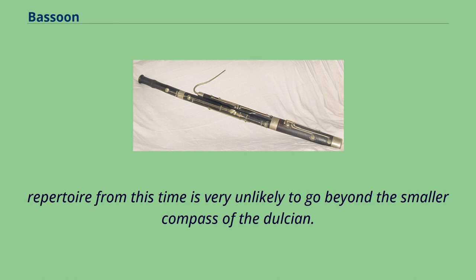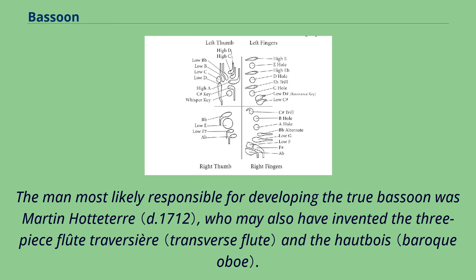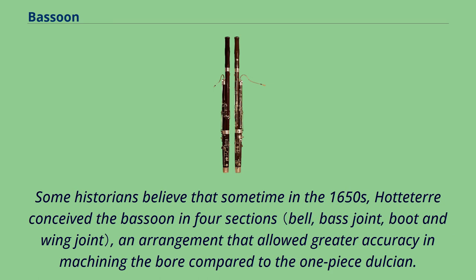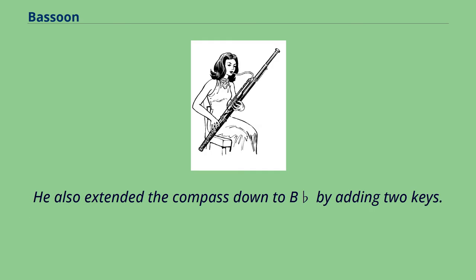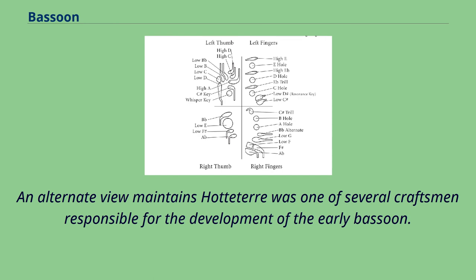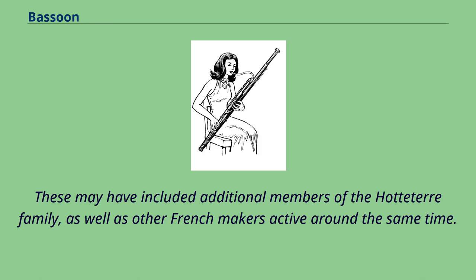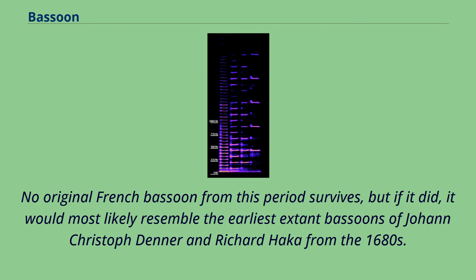The man most likely responsible for developing the true bassoon was Martin Hotteterre, who may also have invented the three-piece flûte traversière and the hautboy. Some historians believe that sometime in the 1650s, Hotteterre conceived the bassoon in four sections, an arrangement that allowed greater accuracy in machining the bore compared to the one-piece Dulcian. He also extended the compass down to B-flat by adding two keys. An alternate view maintains Hotteterre was one of several craftsmen responsible for the development of the early bassoon. No original French bassoon from this period survives, but it would most likely resemble the earliest extant bassoons of Johann Christoph Denner and Richard Haka from the 1680s.